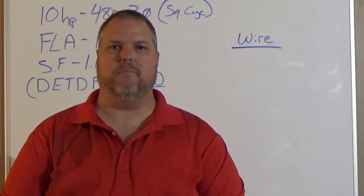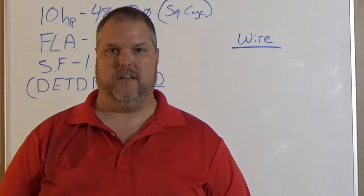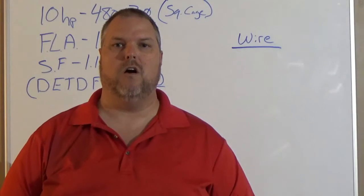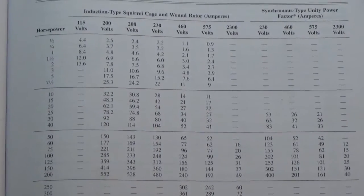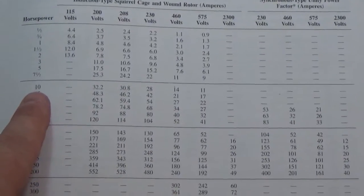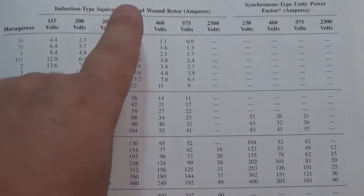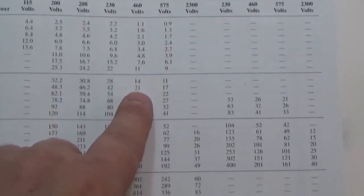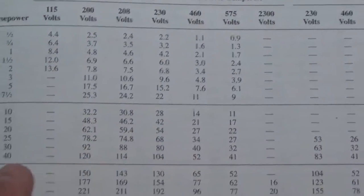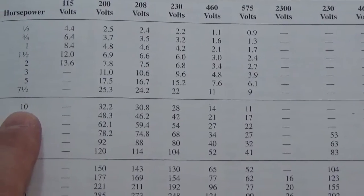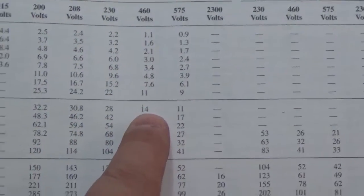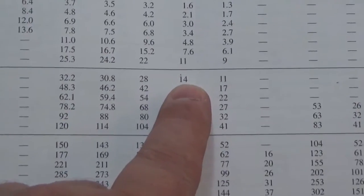The thing we need to do is we need to find the FLC. So what does that mean? We need to go into 430.250. And we're going to figure out what our FLC is for a 10 horsepower, 480 volt, three-phase motor. So we're at a 10 horsepower. We have 480 here. We use the 460 chart and I'll explain that in a minute. We go down and we find 10 horsepower top line. It is 14 amps.